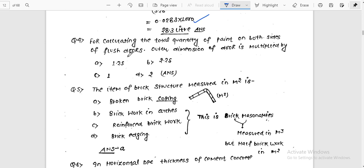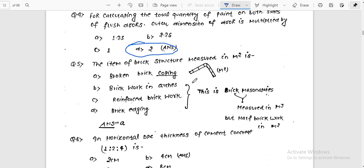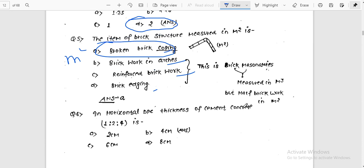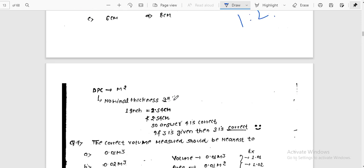For calculating total quantity of paint on both sides of flush doors, multiply door dimensions by the number. The item of brick structures measured in square meter is broken brick coping. For horizontal DPC with 1:2:4 ratio, thickness is 4 centimeters. One inch equals 2.54 centimeters.